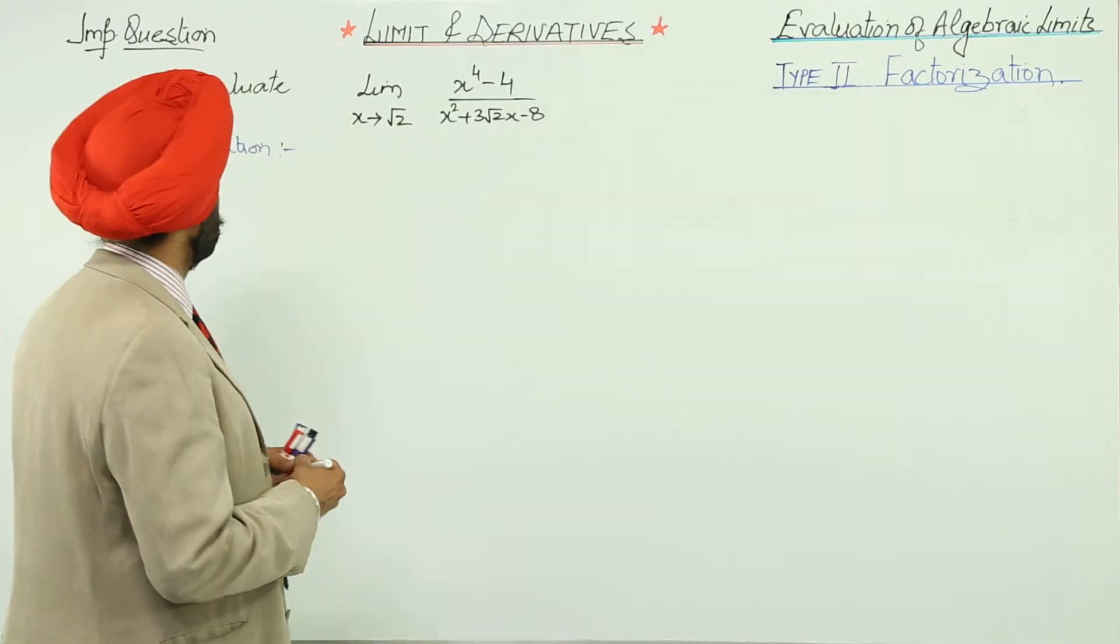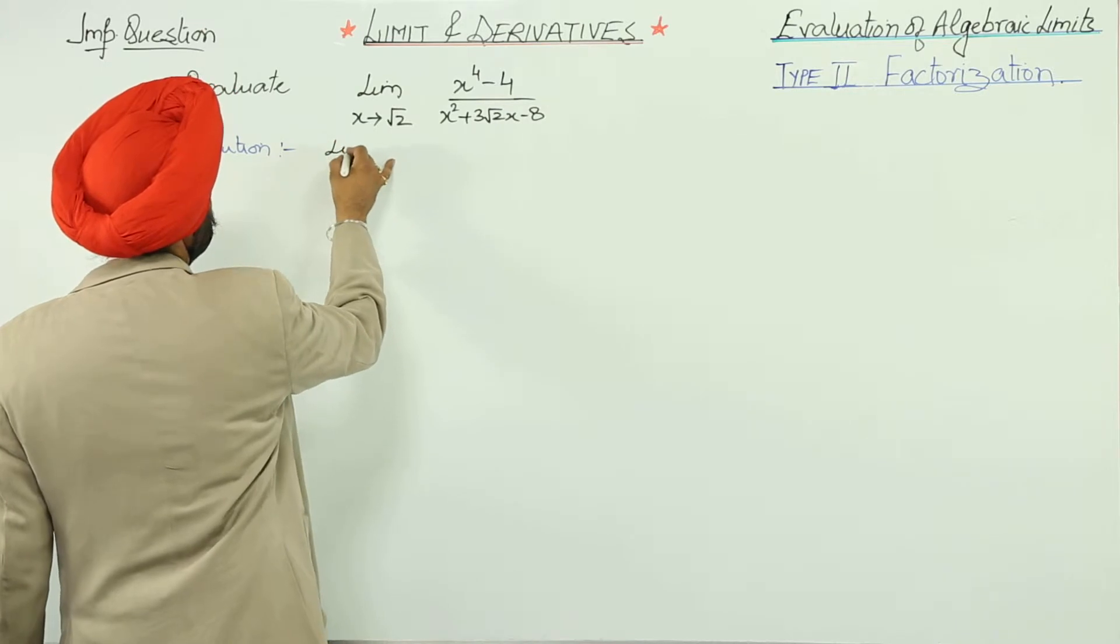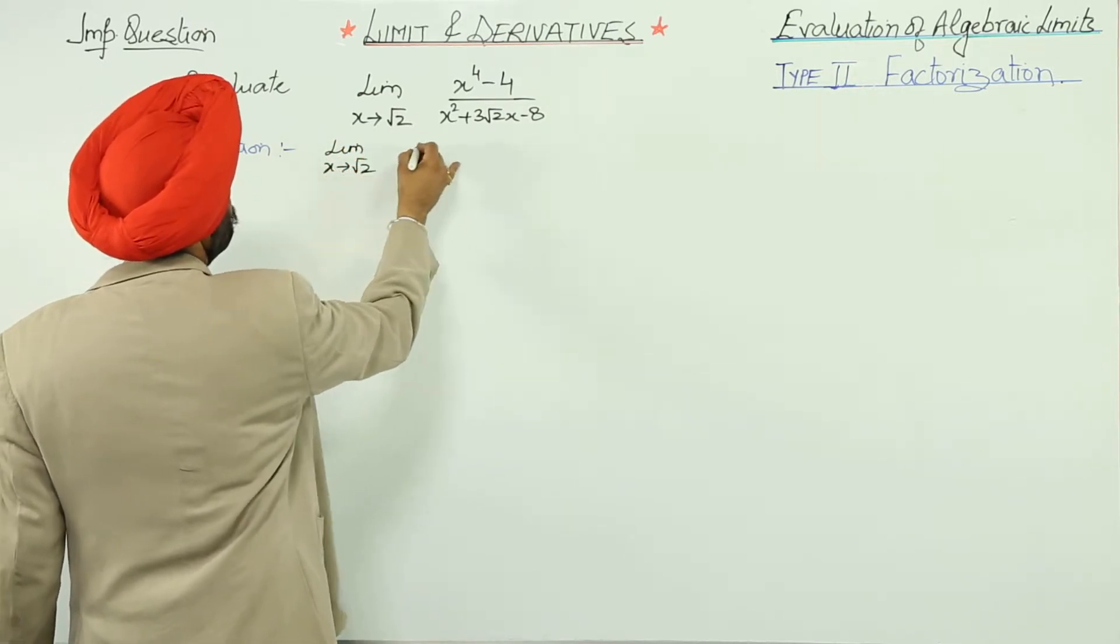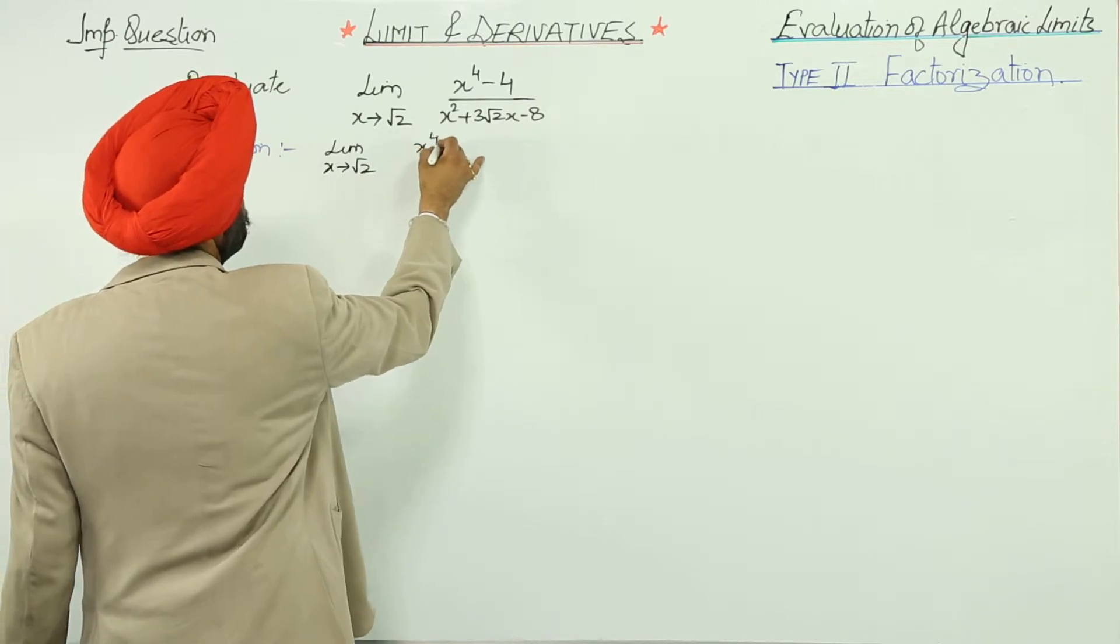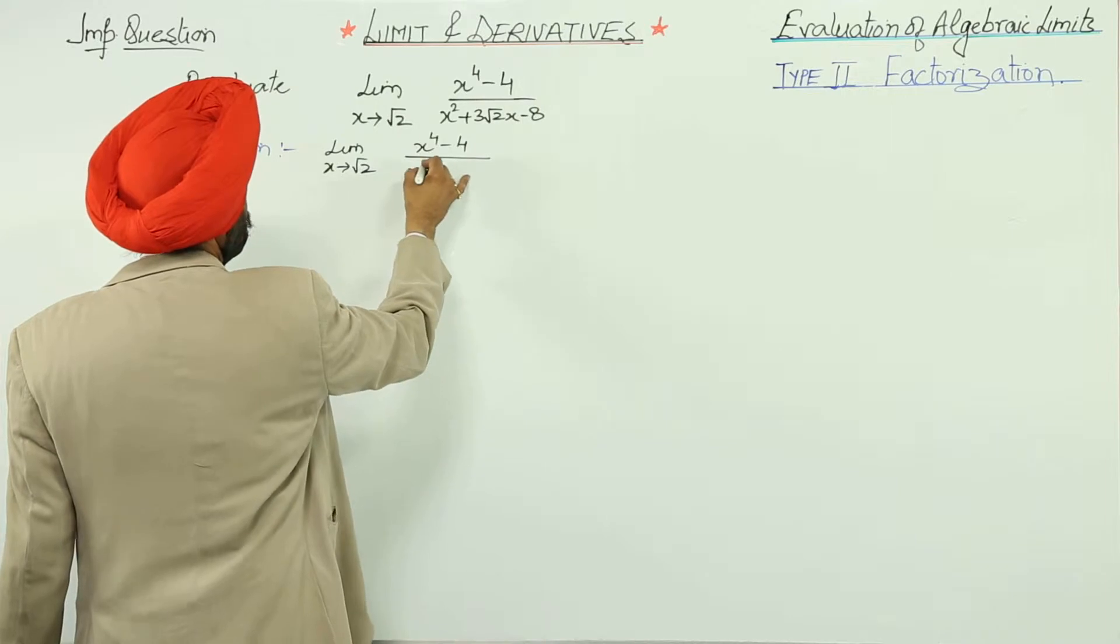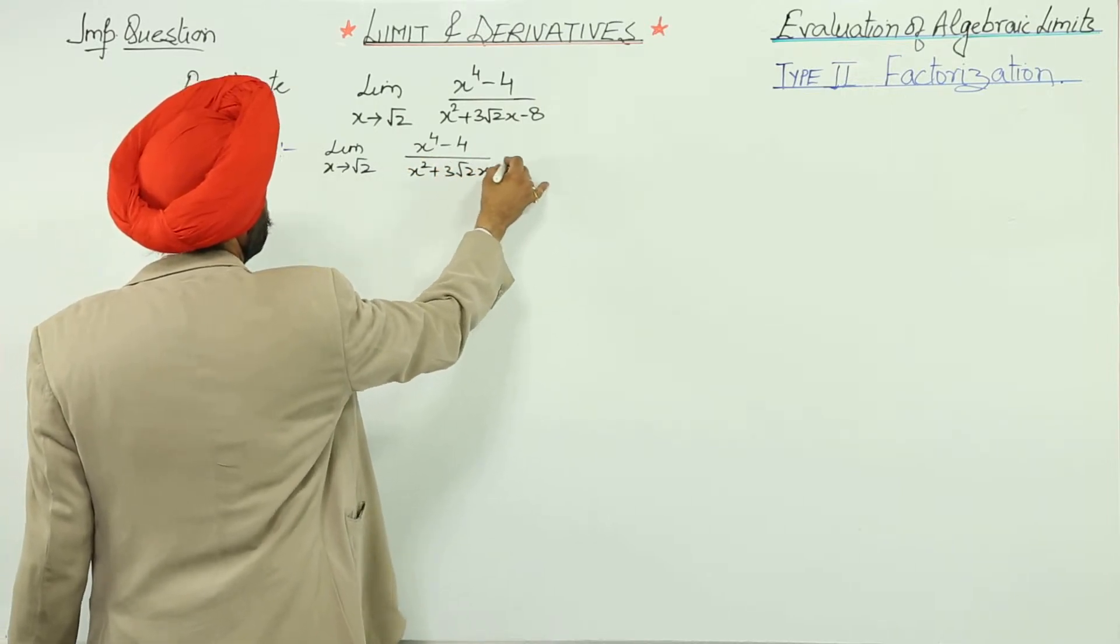Now a very important question we are having. Limit x approaches to square root of 2: x raised to power 4 minus 4 upon x square plus 3 root 2x minus 8.